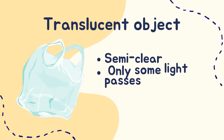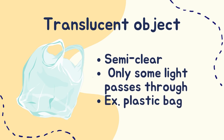Translucent objects are semi-clear. We can slightly see through translucent objects — only some light passes through these objects. Examples of translucent objects are frosted glass and wax paper.